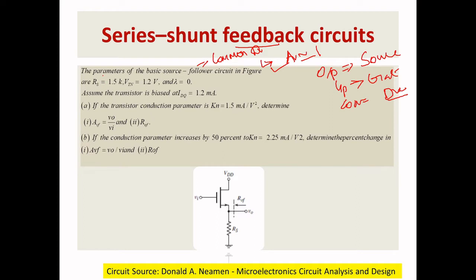The given values are: RS = 1.5 kΩ, VTN = 1.2 V, and λ = 0. The drain current IDQ = 1.2 mA. We want to find the voltage transfer function and output impedance when KN = 1.5. In a second question, when the conduction parameter is increased by 50% to KN = 2.25, we want to find the percentage change in the transfer function.